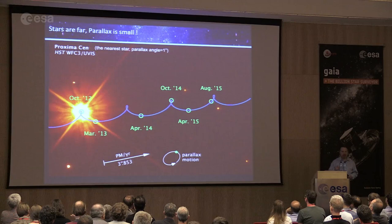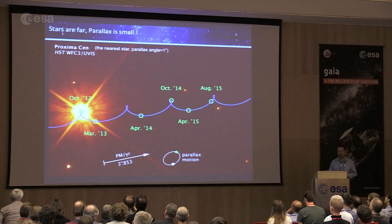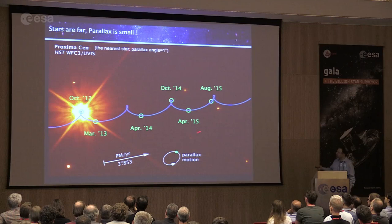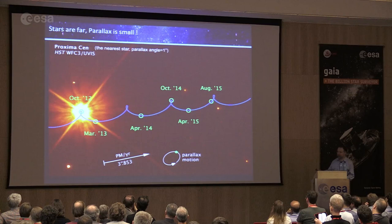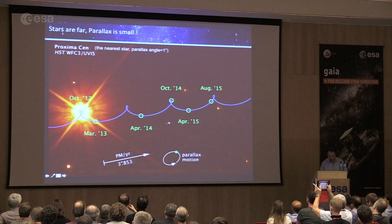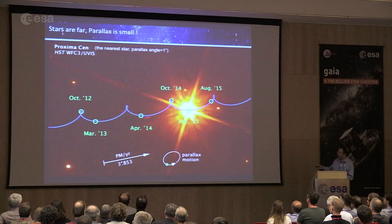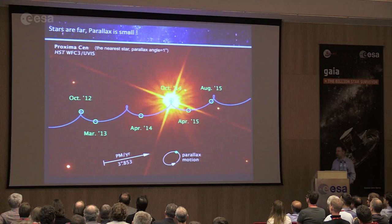The best chance to actually see parallax is with the very nearest star, Proxima Centauri, imaged with the Hubble Space Telescope. In a series of Hubble observations, you can see Proxima Centauri moving relative to background stars: a combination of proper motion drifting in one direction, and a parallax motion reflecting Earth's orbit around the Sun. In the movie, the proper motion is the strongest component, but every time the star moves perpendicular to that drift, it's due to parallax.